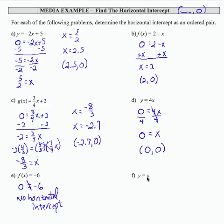For the last one, y equals x, set y equal to 0, and I get x equals 0. So similar to what we had up here, the horizontal intercept is 0, 0. And in this case, that is also the vertical intercept.